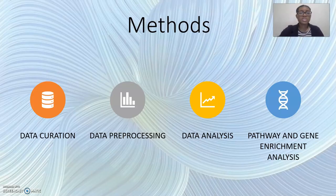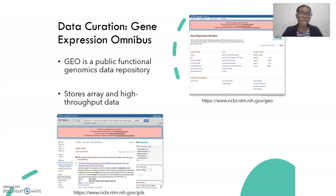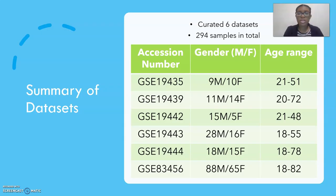The first method was data curation. I collected datasets on tuberculosis patients focusing on their disease state, age, gender, and ethnicity. Data was organized and integrated using Gene Expression Omnibus, or GEO, which is a public functional genomics data repository that stores array and high-throughput data. I originally created six datasets and 294 samples in total.